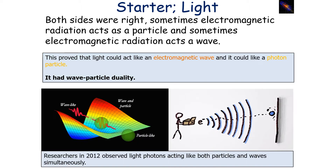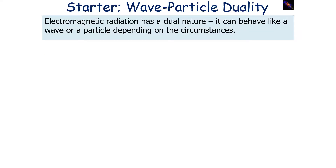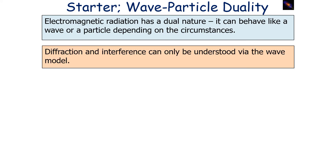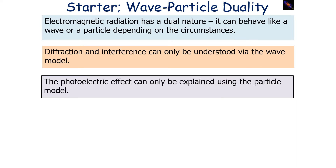It had wave-particle duality, and researchers have actually observed light photons acting as both particles and waves simultaneously. It was therefore indicated that electromagnetic radiation has a dual nature — it could behave like a wave or a particle depending on the circumstances. Diffraction and interference could only be understood by the wave model, whilst the photoelectric effect could only be explained using the particle model.